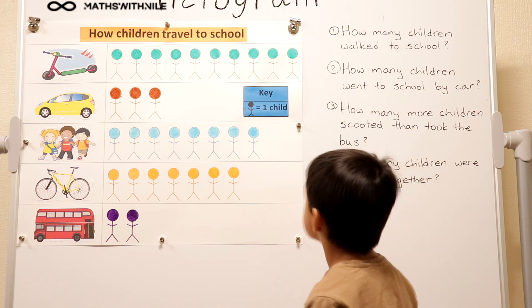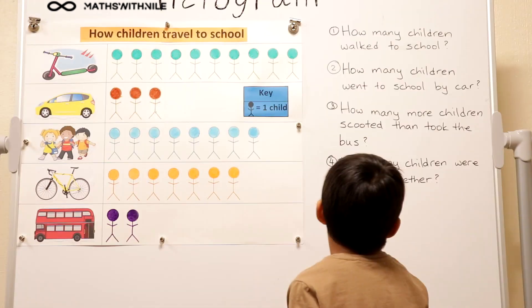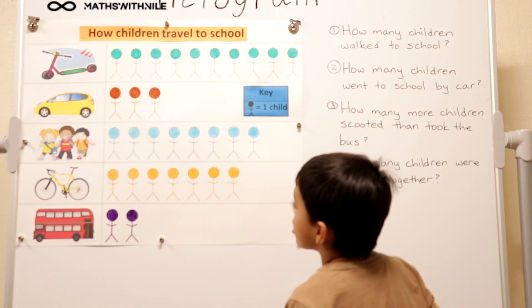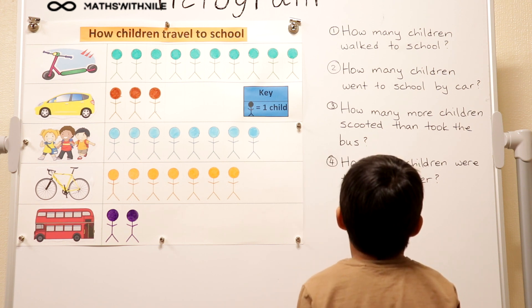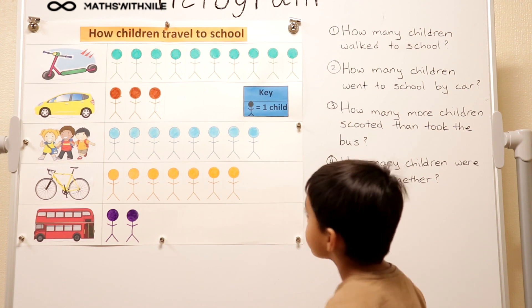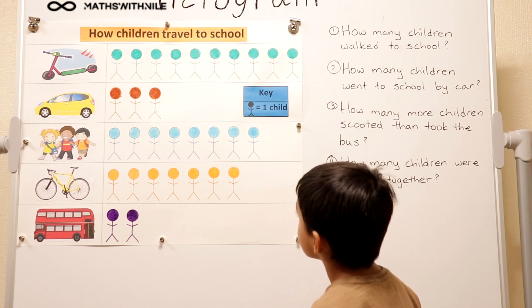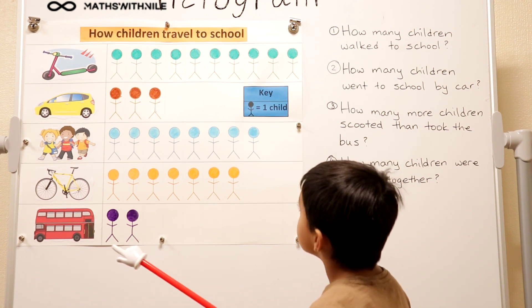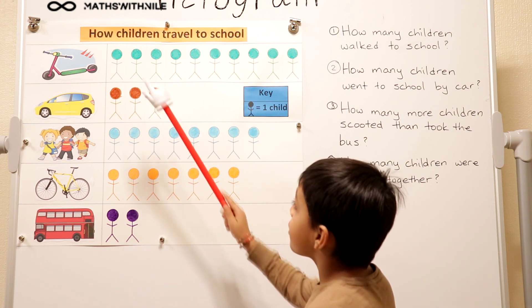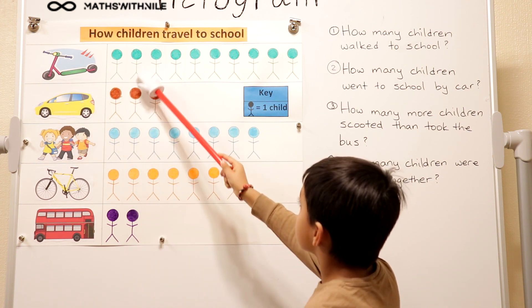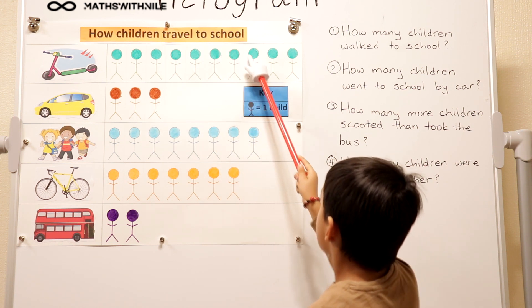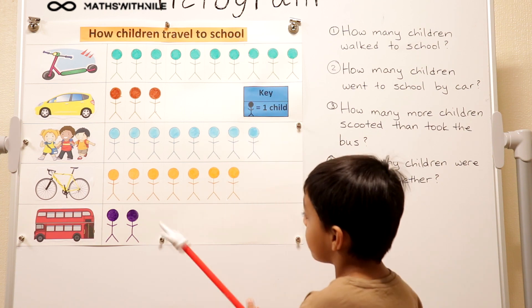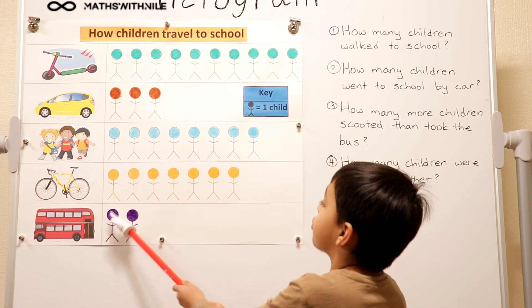What does the next question say? How many more children scooted than took the bus? So what are you going to do to work that out? Well, for scooter it's one, two, three, four, five, six, seven, eight, nine, ten. And for bus, it's one, two.